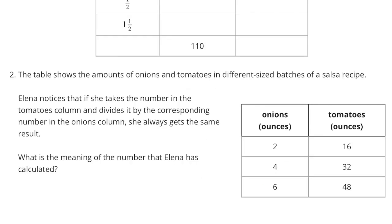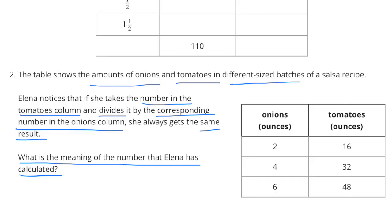Number 2. The table shows the amounts of onions and tomatoes in different sized batches of a salsa recipe. Elena notices that if she takes the number in the tomatoes column and divides it by the corresponding number in the onions column, she always gets the same result. What is the meaning of the number that Elena has calculated?